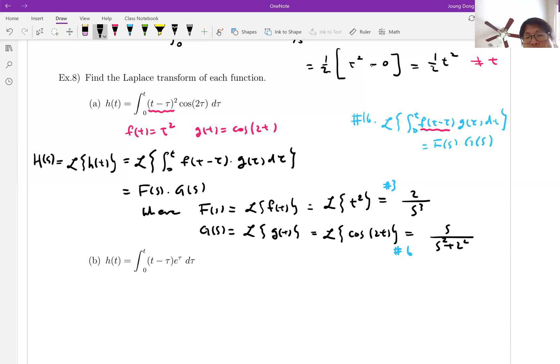Now we're going to plug this one in. Finally I can say h(s) equals f times g, which is two over s cubed times s over s squared plus four.